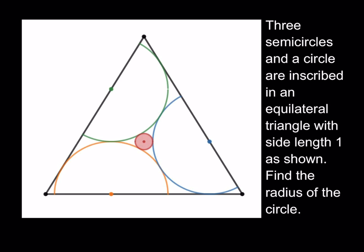We have three semicircles and a circle that are inscribed in an equilateral triangle with side length 1, and we're supposed to find the radius of the circle. We'll have two main steps. First, we're going to find the radius of the semicircles — by the way, the semicircles are congruent. And then second, we're going to find the radius of the circle.